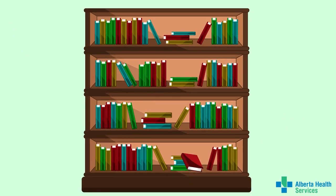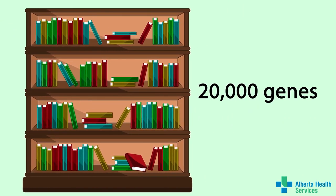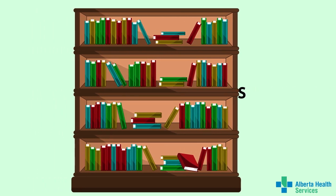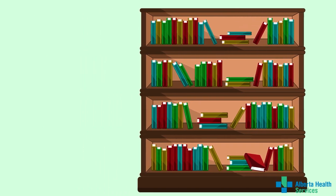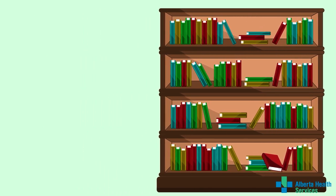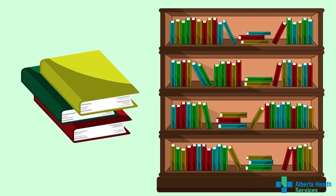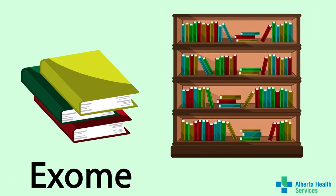You can imagine your genetic information as a large library. You have around 20,000 genes, or books, in your genetic library. With exome sequencing, we only read through the books that we understand the best in this library. All these books together are called the exome — this is where the test gets its name.